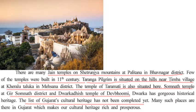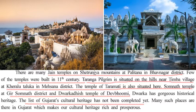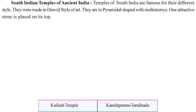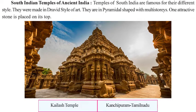Moving on, there are giant temples on the Shatrunjay mountains in the Bhavnagar district; some temples among them were built as far back as the 11th century. The Taranga pilgrimage is situated on the hills near Timba village of Kheralu taluka in Mehsana district, where the temple of Taramati is also located. The Somnath temple at Gir Somnath district and Dwarka, in Devbhumi Dwarka, also have gorgeous historical heritage. The list of Gujarat's cultural heritage has not been completed here — many places remain.